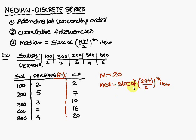The median formula is size of (n+1)/2th item. n stands for 20. 20 plus 1 by 2, that is 10.5 item.